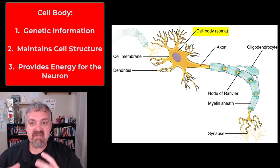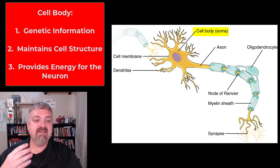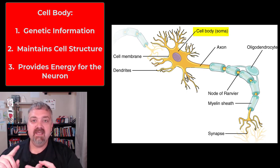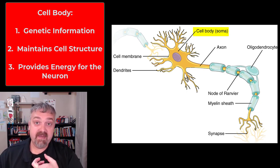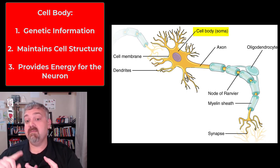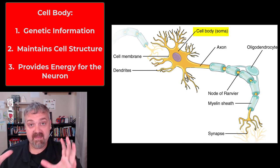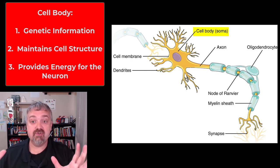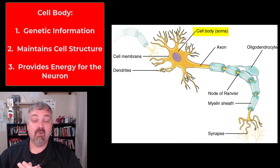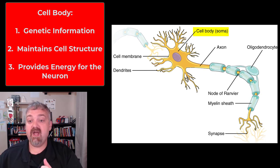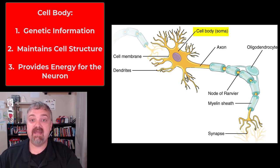The cell body is going to be where all the cell organelles and these types of things are going to be. The genetic information for the cell is going to be there. It's going to help keep and maintain the structure of this neuron, and it's also where the energy is produced that's going to drive all these other activities that are occurring at a neuron.